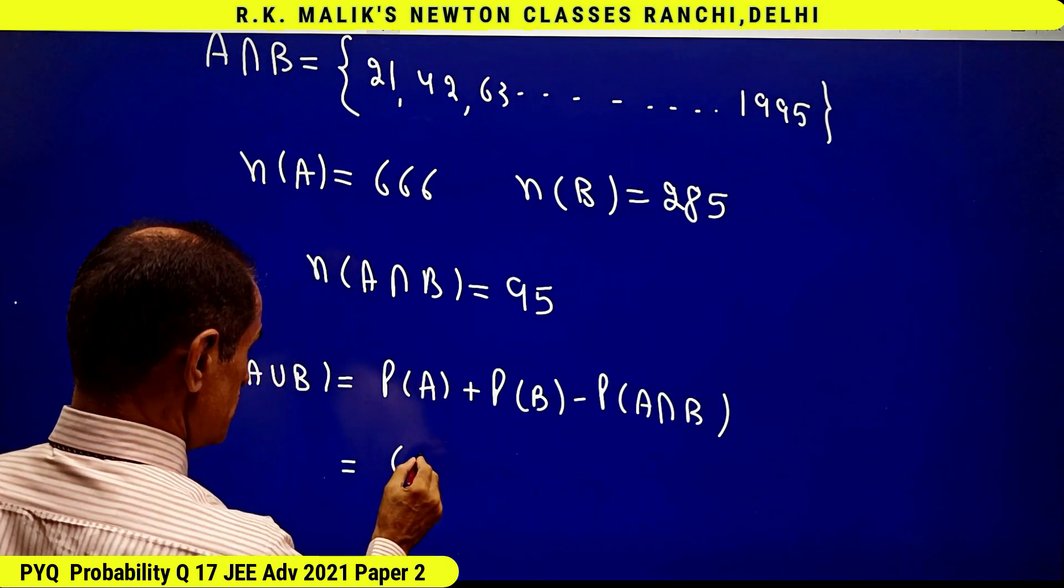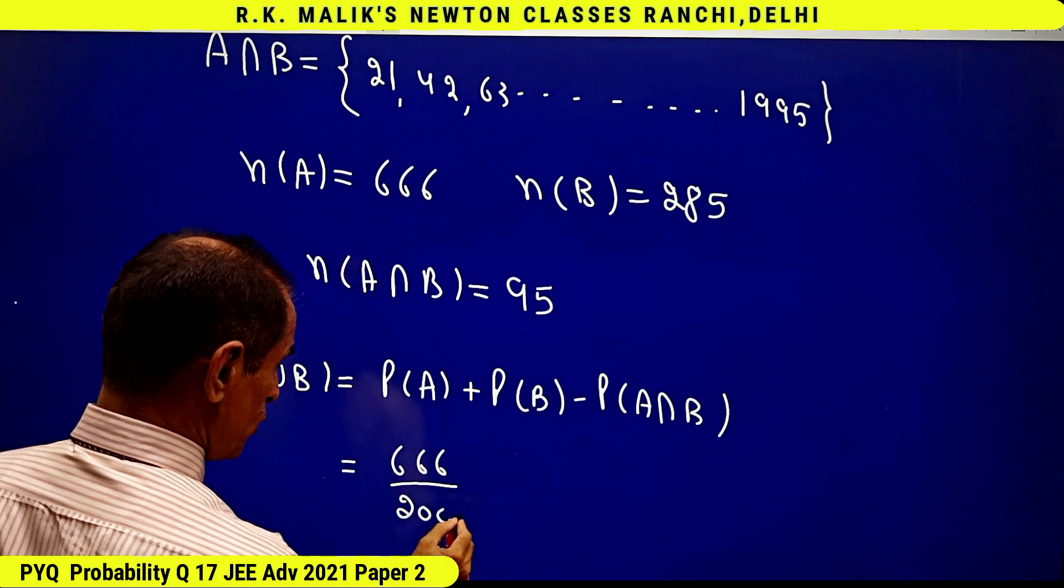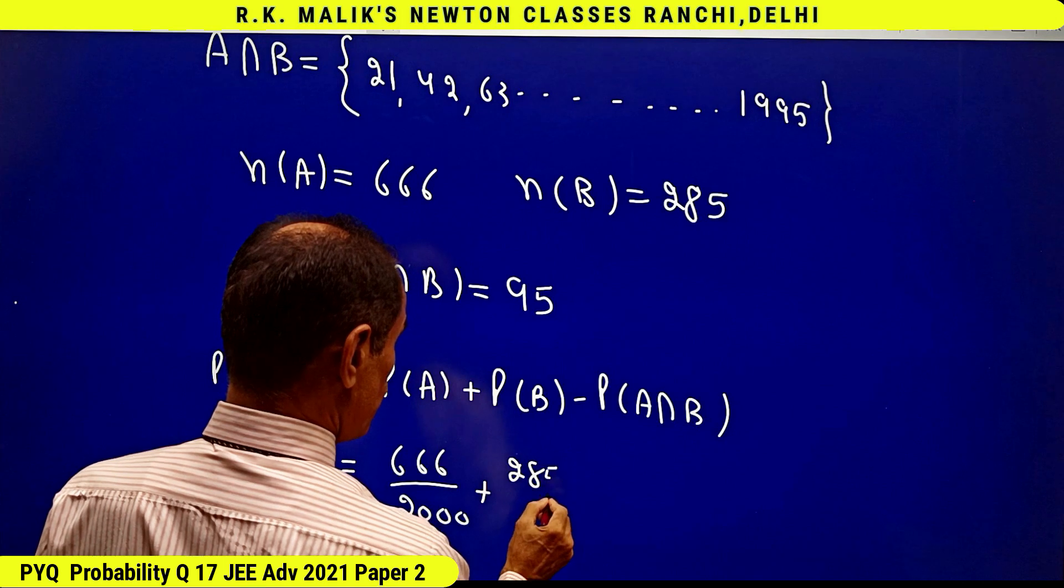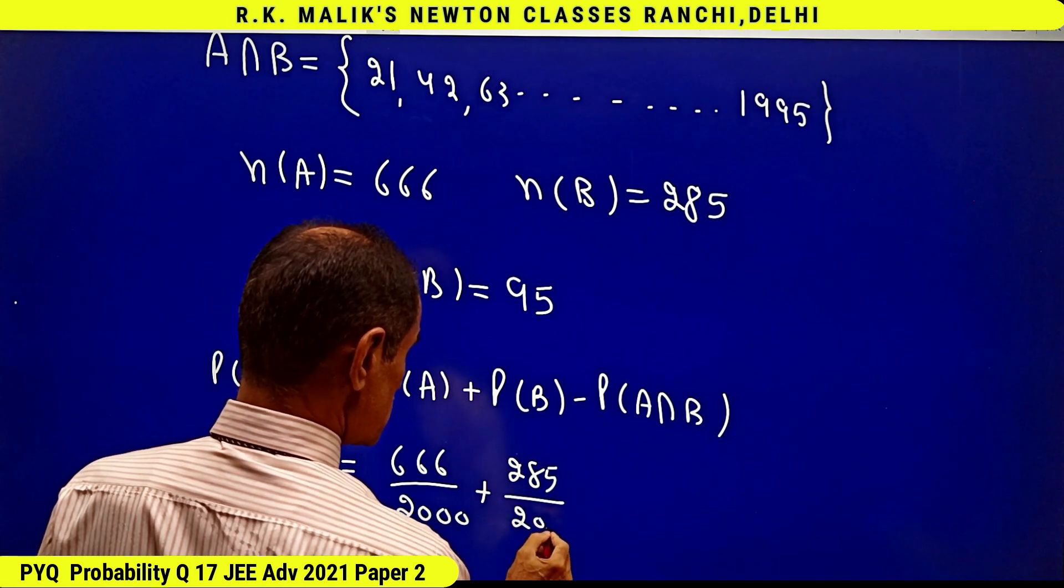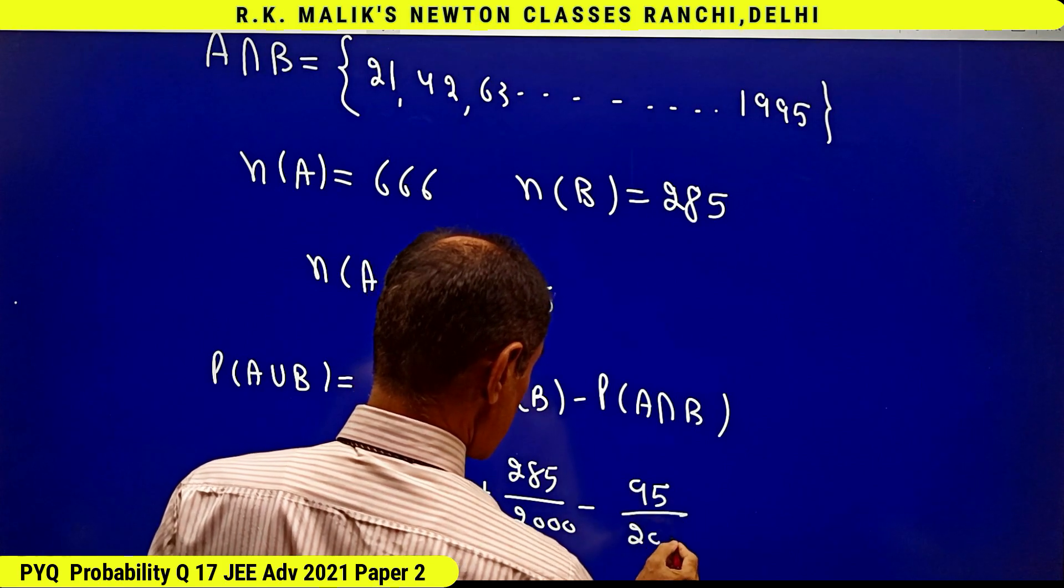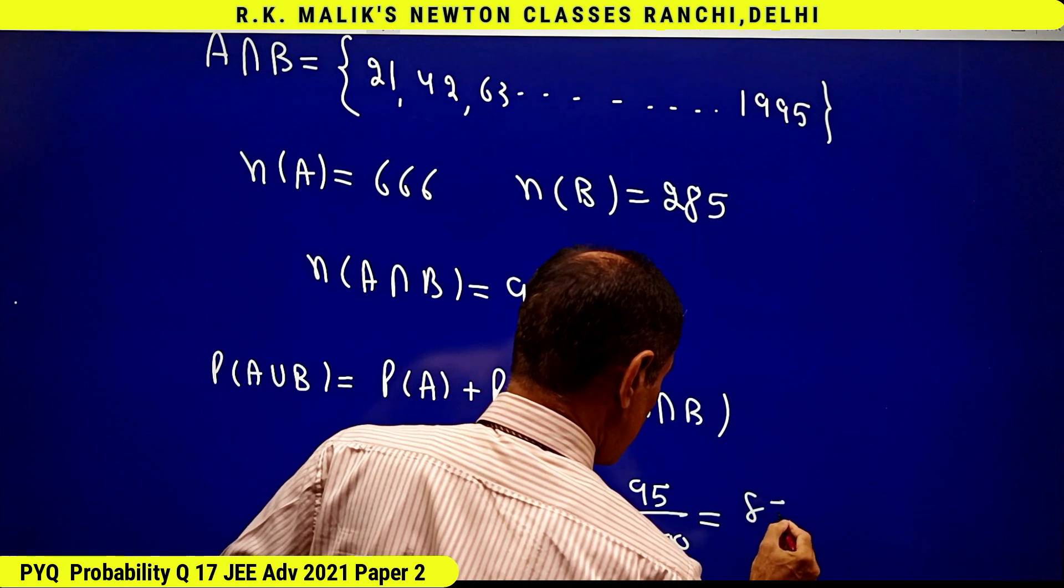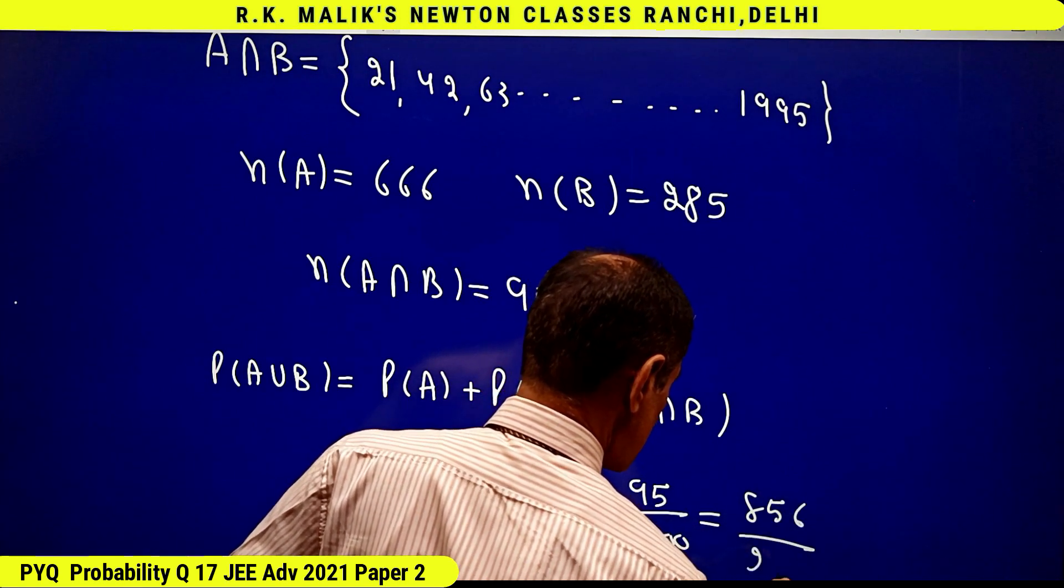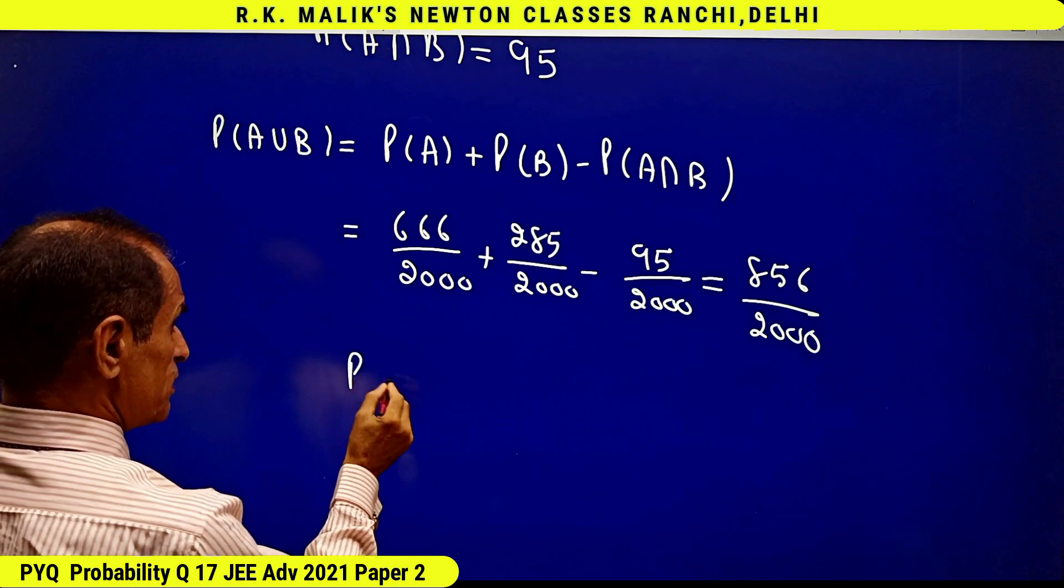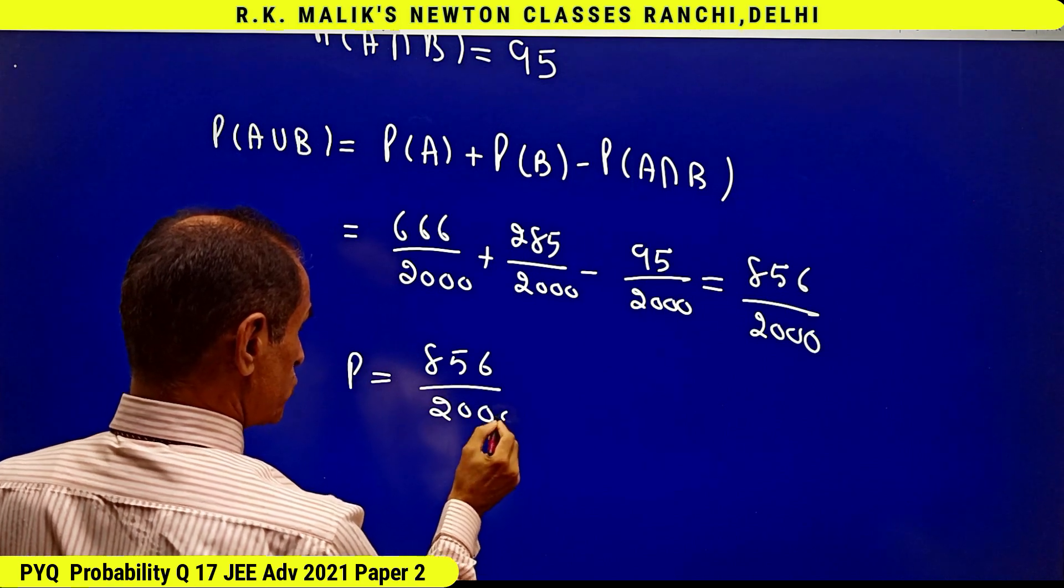That is 666 by 2000 plus 285 by 2000 minus 95 by 2000. This is equal to 856 by 2000. Hence the value of p is 856 by 2000.